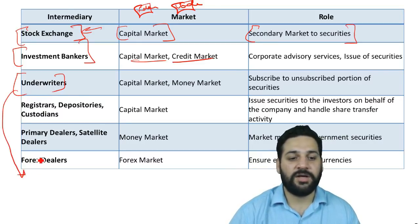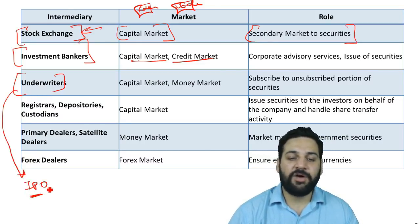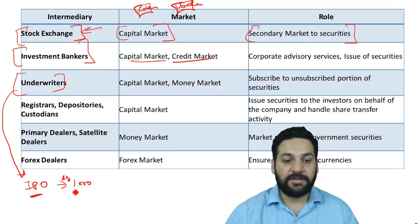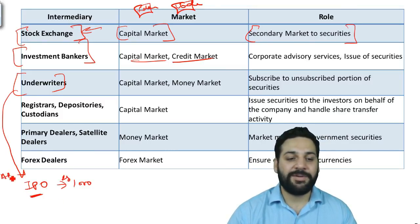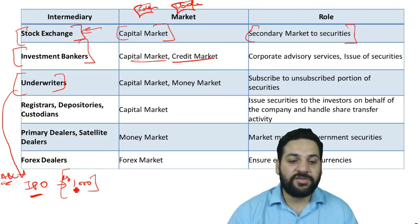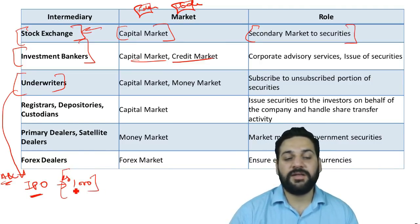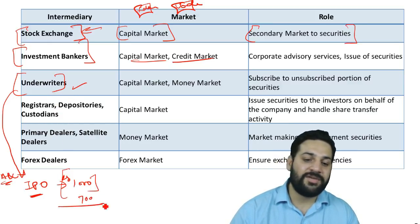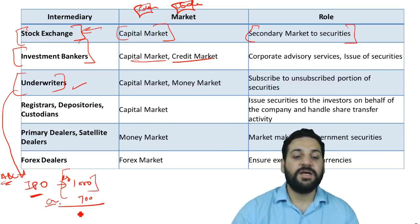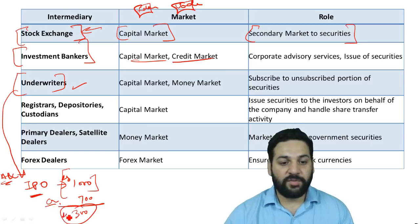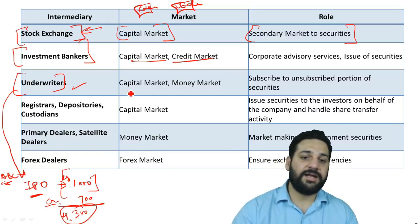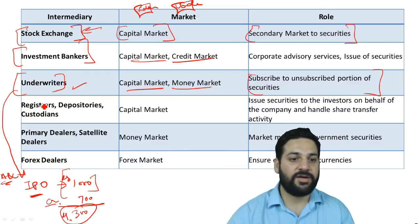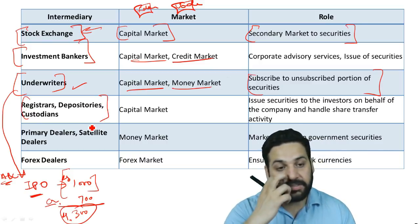Underwriters support companies during an IPO. For example, if a company issues shares worth 1,000 crore rupees but isn't sure all shares will be sold, they approach underwriters who agree to buy the remaining unsubscribed portion. Underwriters exist in both the capital market and the money market — they subscribe to the unsubscribed portion of securities. There are also registrars, depositories, and custodians.